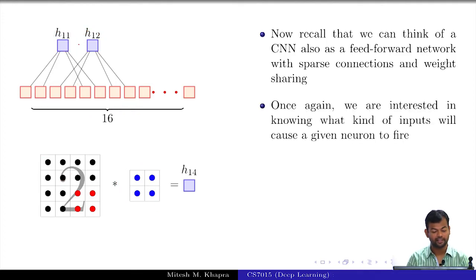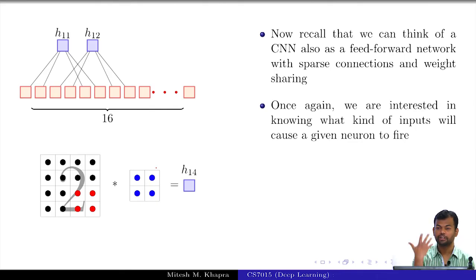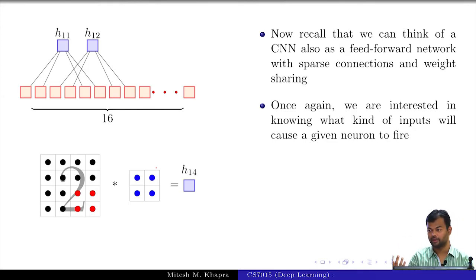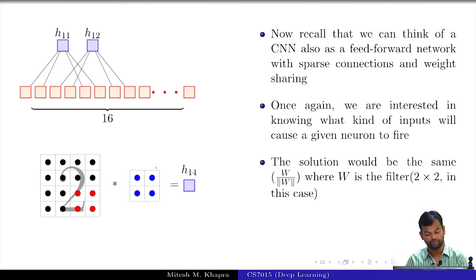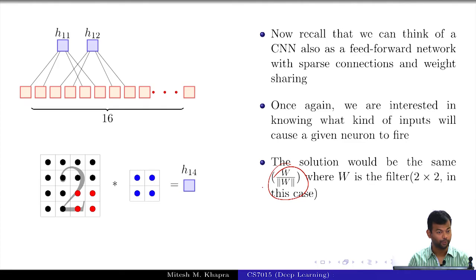So we are going to do exactly the same thing. We will have our 3x3, 5x5, or 7x7 filters and we are just going to visualize them as images. But unlike the earlier case where the image corresponded to the full MNIST image, here these images correspond to those 3x3 or 5x5 patches, and we want to see what kind of patches cause the neurons to fire. The solution is still the same — we will have this normalized weight filter which is causing the input to fire.